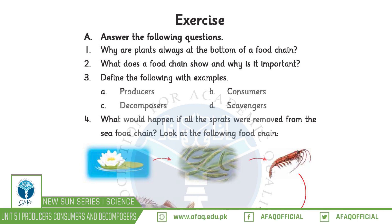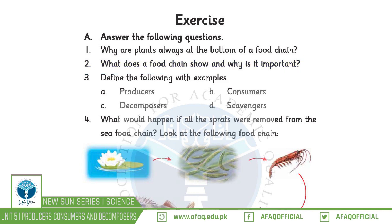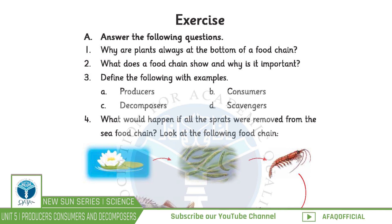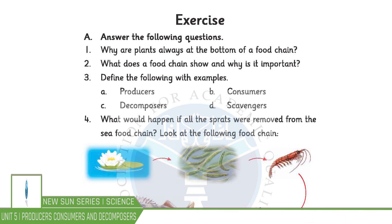Question number 2: A food chain shows a feeding relationship among living things. It shows a transfer of energy and nutrients from one organism to another. It is important because it helps to keep and maintain the balance in nature.